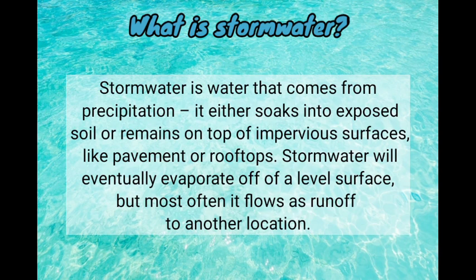Stormwater is water that comes from precipitation. It either soaks into exposed soil or remains on top of impervious surfaces like pavement or rooftops. Stormwater will eventually evaporate off of a level surface, but most often it flows as runoff to another location.